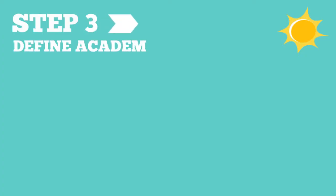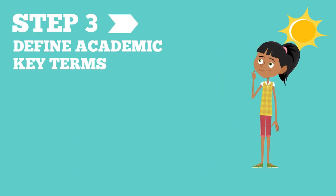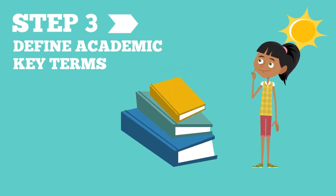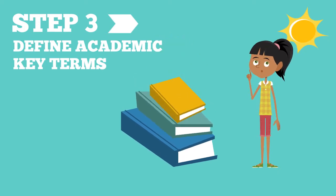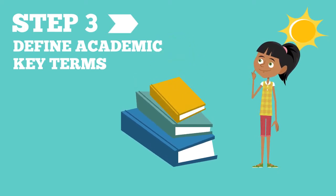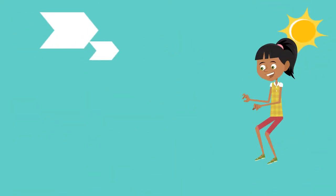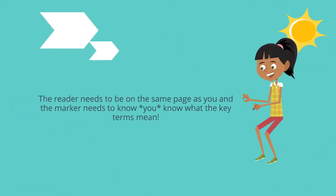Define your overarching key terms using academic peer-reviewed resources. There is academic work written on everything, so find something that is already written, which is peer-reviewed — meaning it has academic rigor — and that immediately demonstrates some sort of research independence. Or you can find something from your unit readings and then quote or paraphrase it with a correct citation in the introduction.